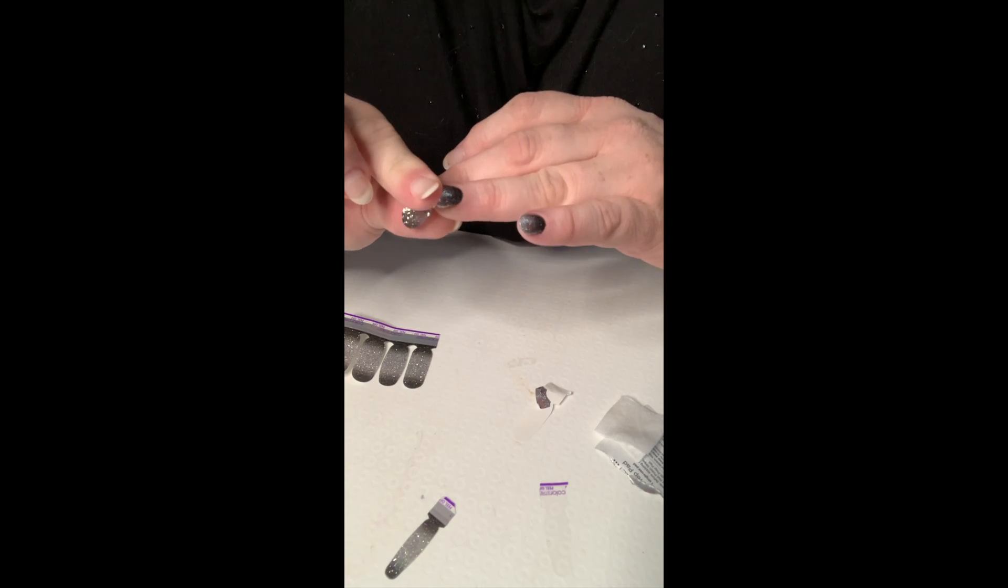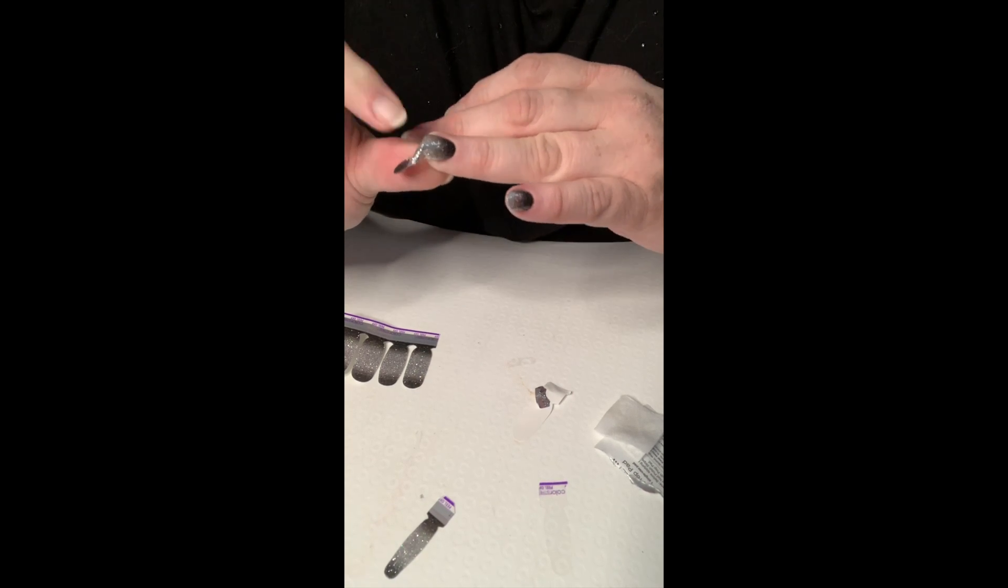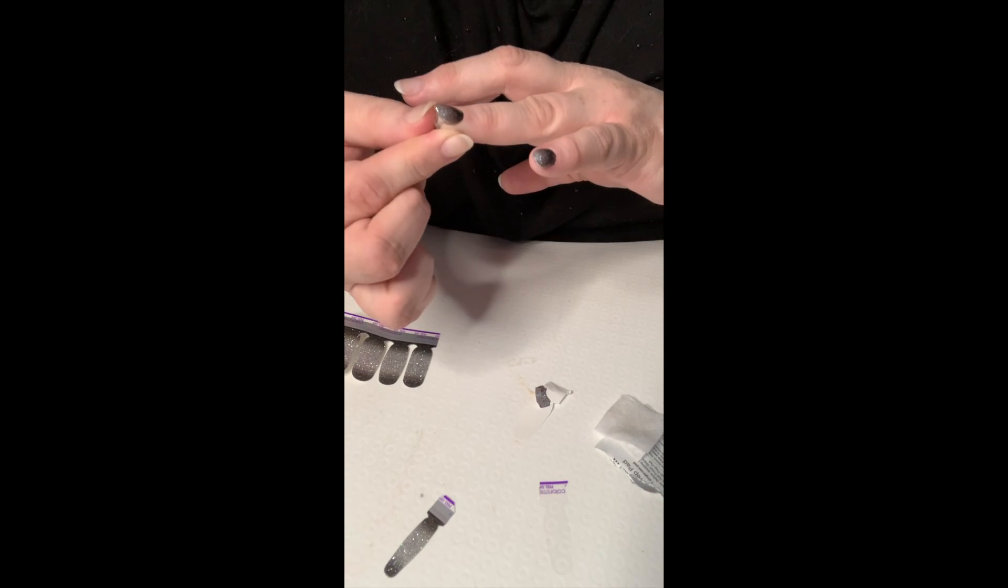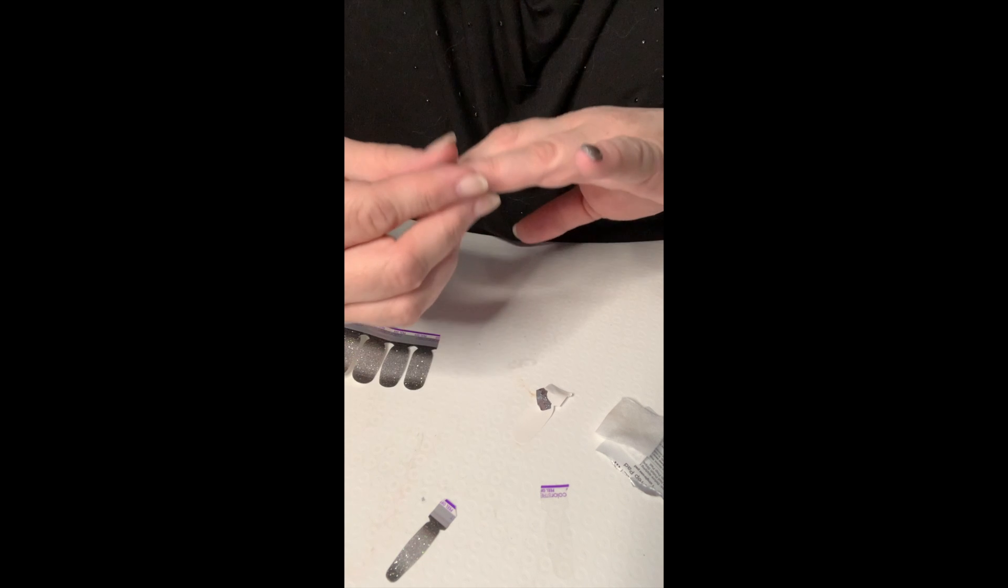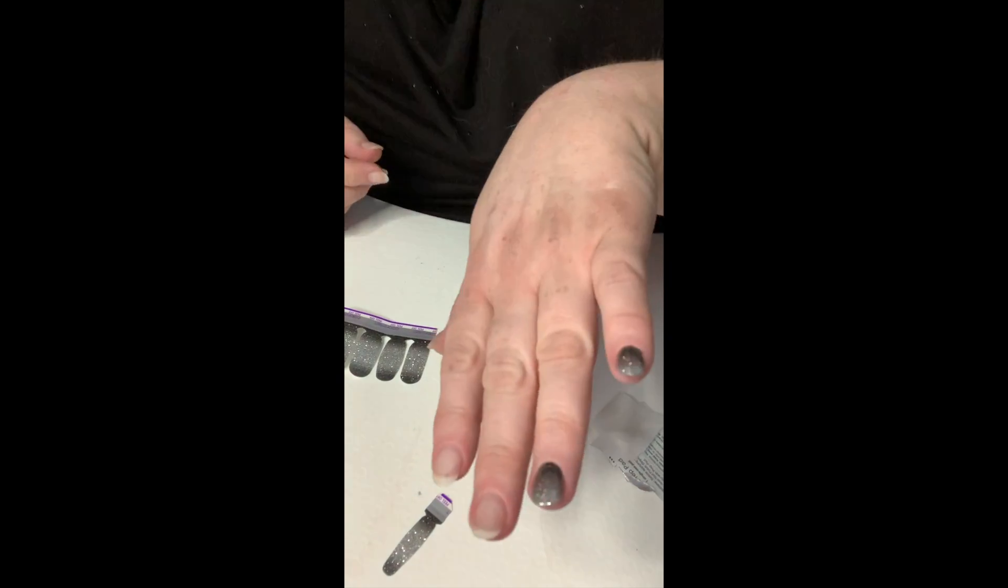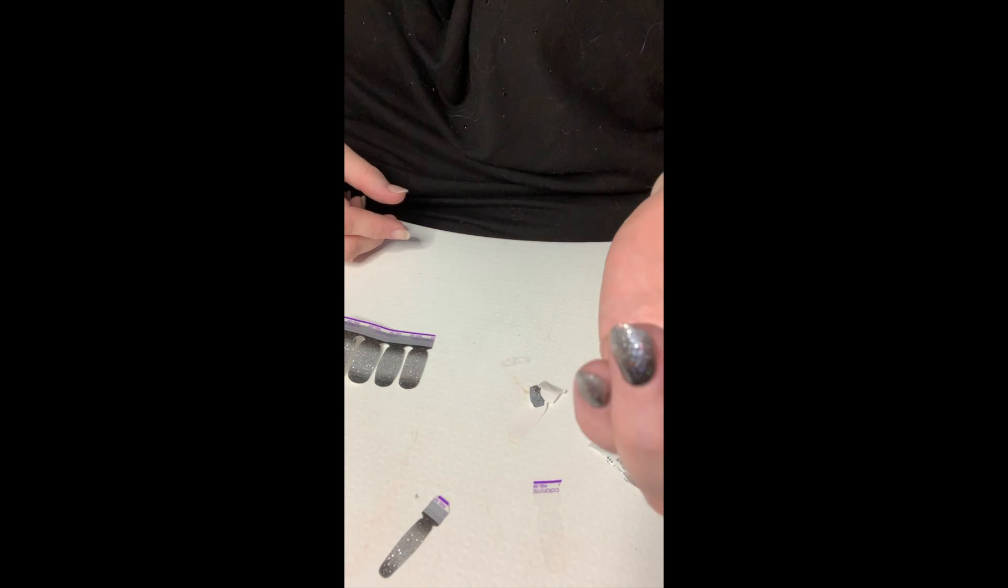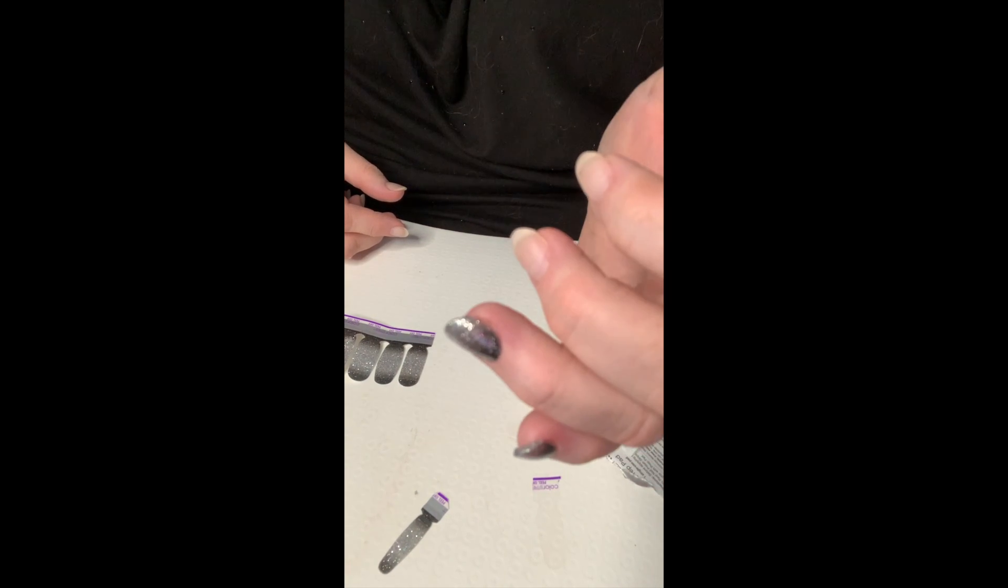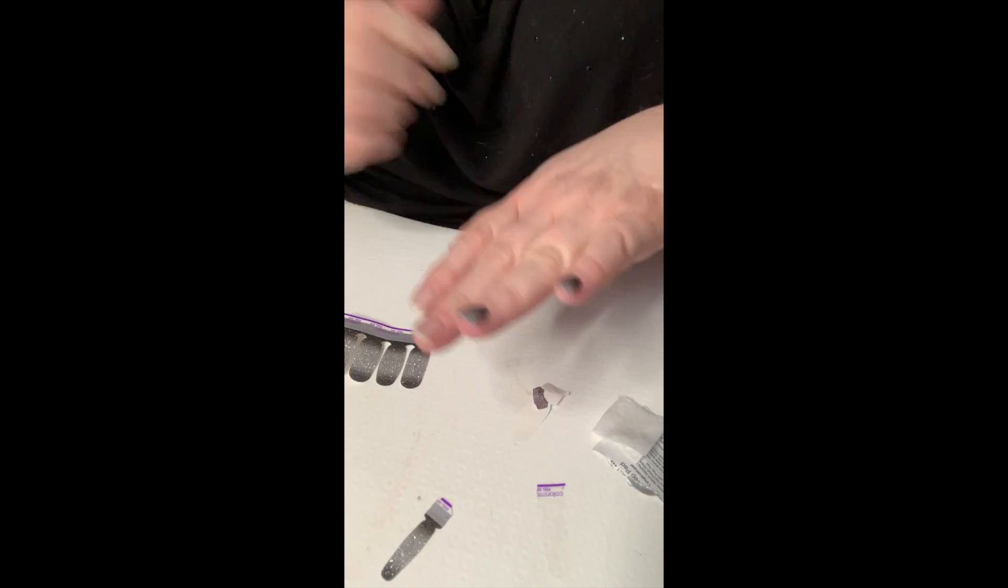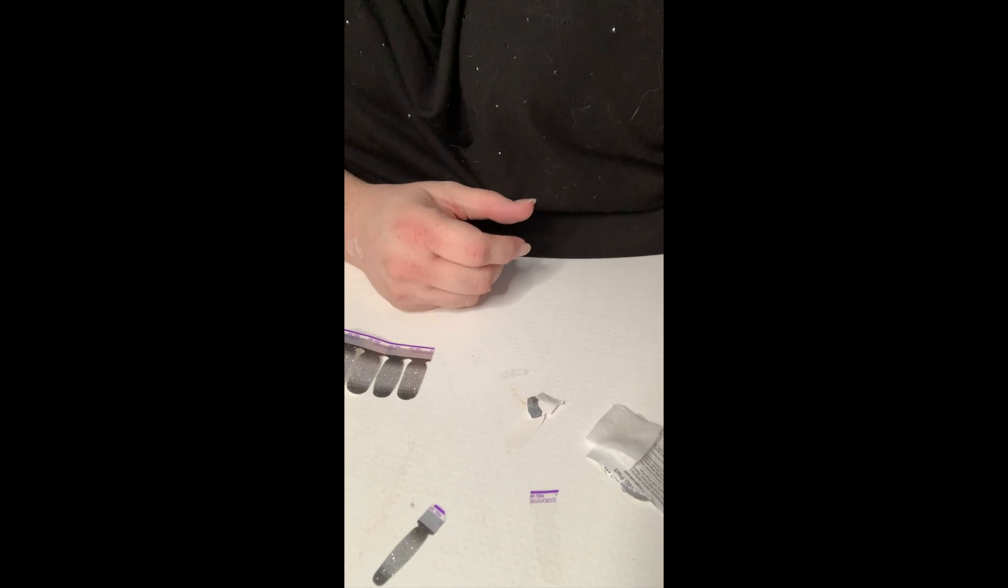And again, I make sure that when I put it along the free edge, there are no bubbles or creases. It just folds right under that nail, and you have a beautiful nail ready to go. It's as simple as that.